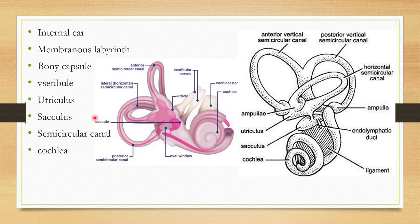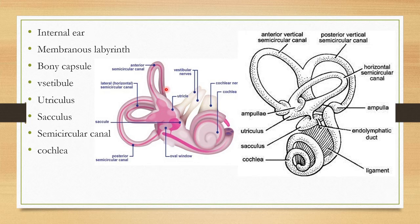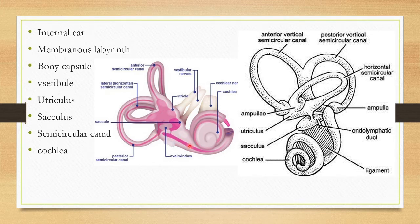The internal ear consists of a membranous labyrinth covered by a bony capsule made up of periotic bones. Inside the bony capsule, the membranous labyrinth is present. The space between the bony labyrinth and the membranous labyrinth is filled with perilymph, while the inside of the membranous labyrinth is filled with endolymph.